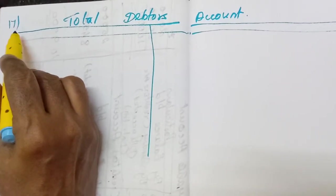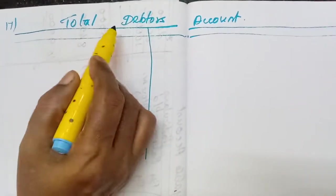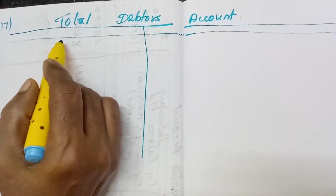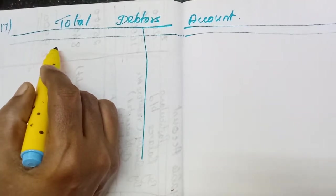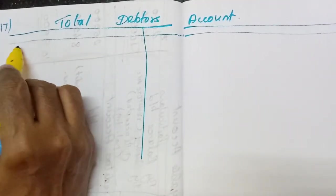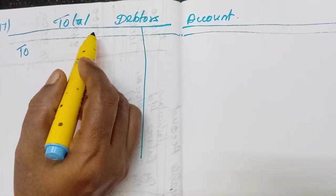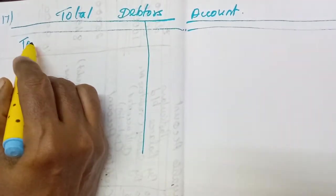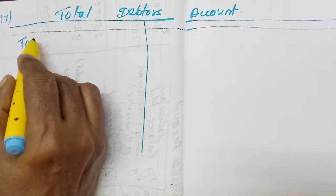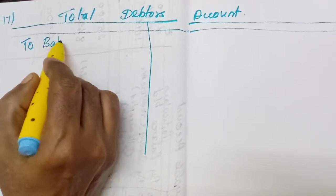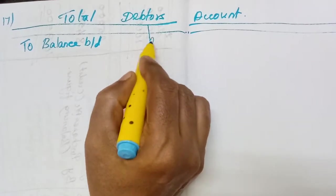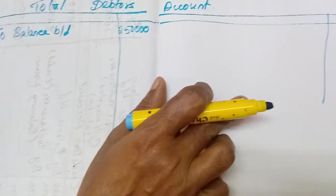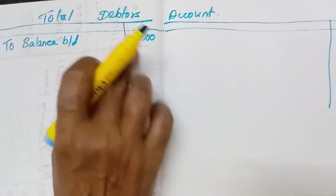Write illustration number 17. First account: total debtors account. Write the opening balance first. The opening balance — sundry debtors on 1-4-2017 — is written as balance brought down: 2,50,000. Then we will see what other items appear in this total debtors account. The closing item will appear on the credit side as the last item.